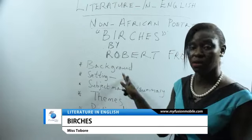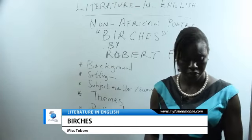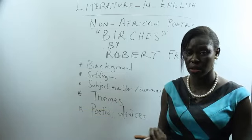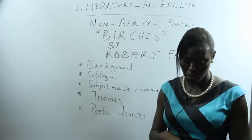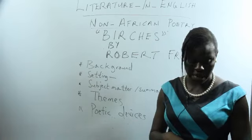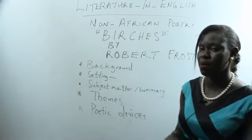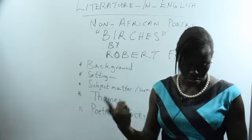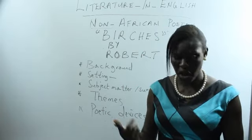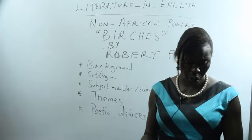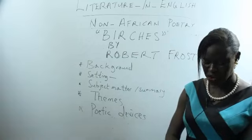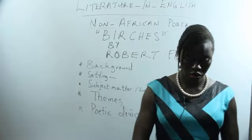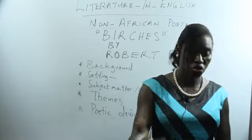From here we would comment on the background of this poem. The entire poem is a reflection of Frost's childhood memories of swinging on a particular type of tree called a birch. Frost actually grew up in the American state of New England, where children were known to be fond of swinging on trees.